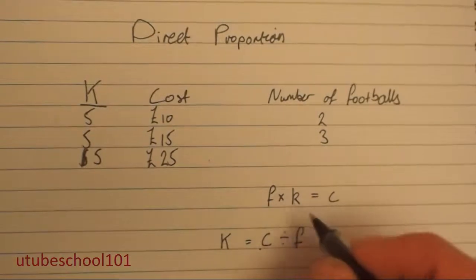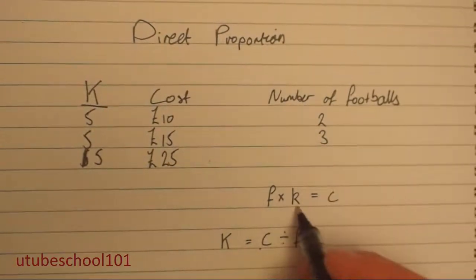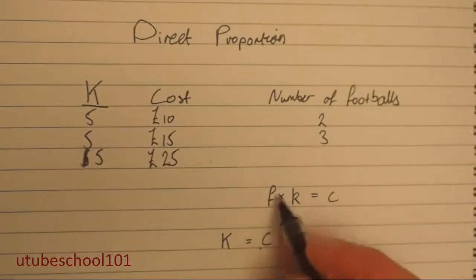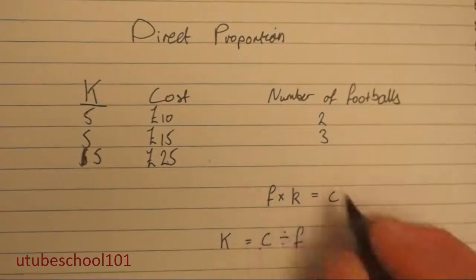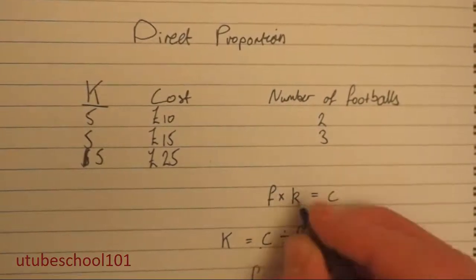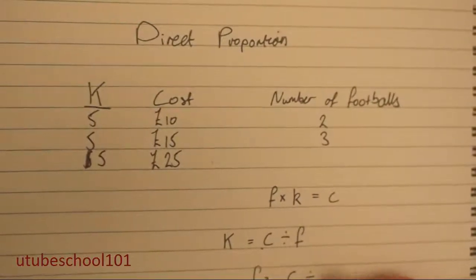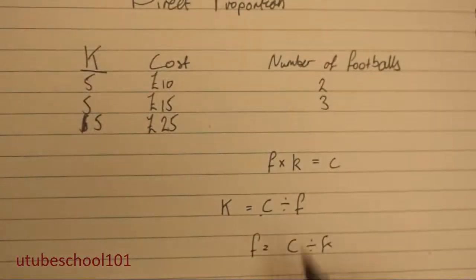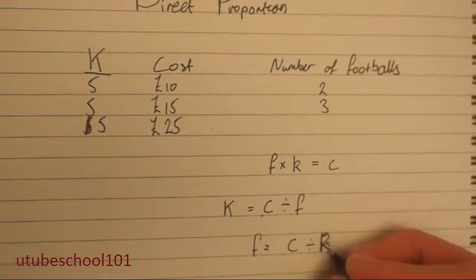So if you go back to this equation, we have the cost, we also have the k. Now you want to find out how many footballs. So to get the number of footballs on its own, we have to divide by k. So c divided by k. And I'll just move the page up so you can see. So f equals c divided by k.